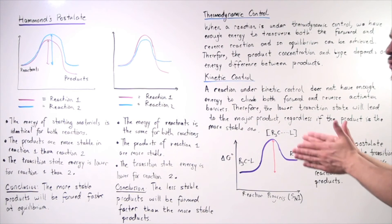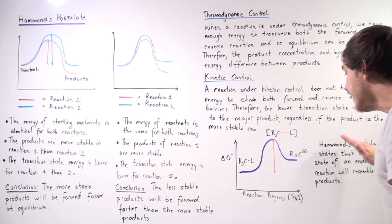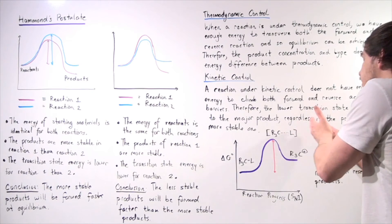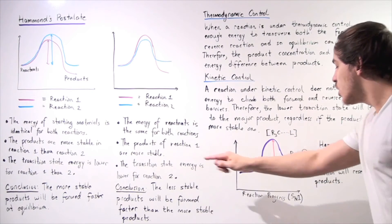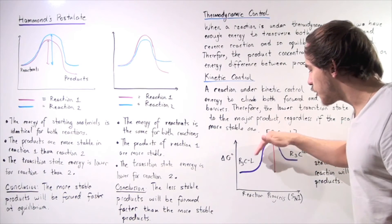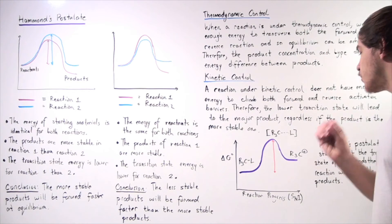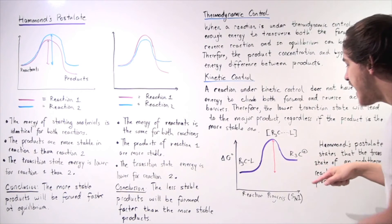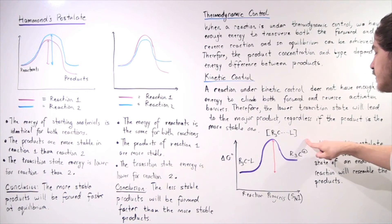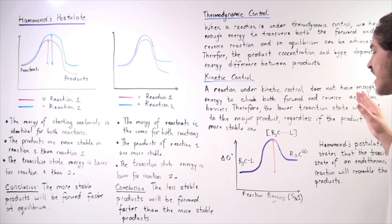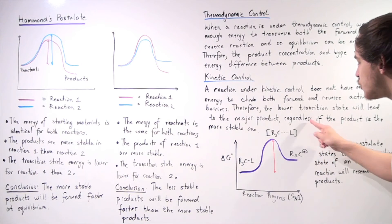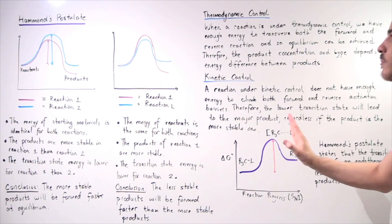The same can be done for an exothermic reaction. In an exothermic reaction, the transition state will look more like the reactants than the products. Going forward we have an endothermic reaction; going in reverse we have an exothermic reaction. When we go in reverse, our activation energy peak is closer to the starting materials — our reactants — and that means the transition state, the highest point, will be closer to our reactants than our products.